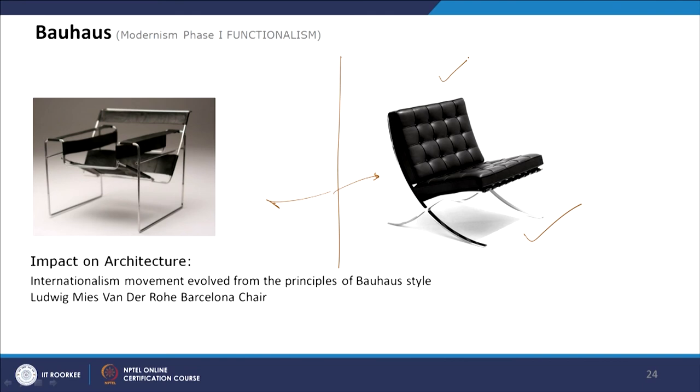Now you can look at this visual similarity — though it is a little curvilinear, similar treatment was there with steel used and the black cushion, showing visual similarity between Bauhaus style and International style, both designed by Mies van der Rohe. Next we will discuss the De Stijl movement, which is a parallel movement to Bauhaus, and how they influenced each other. Thank you.